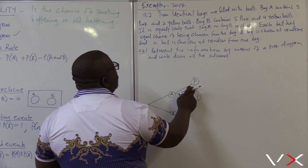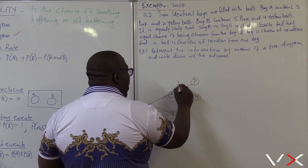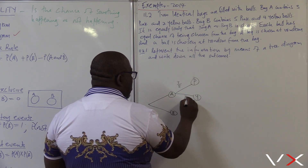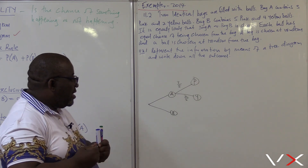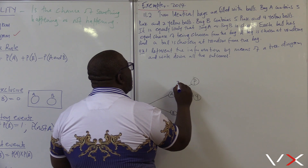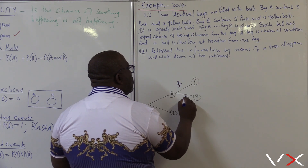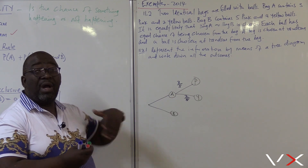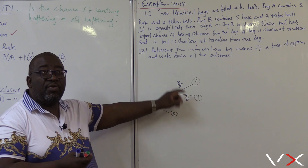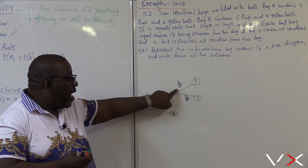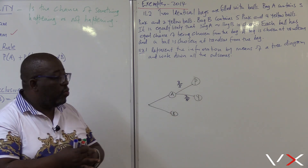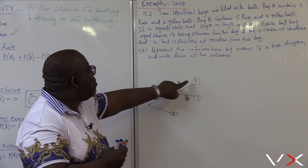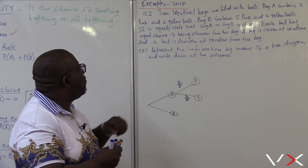Bag A contains three pink balls out of five, and two yellow balls out of five. If you were given that the probability of pink is three over five, you should know the probability of yellow must be two over five so that they add to one.